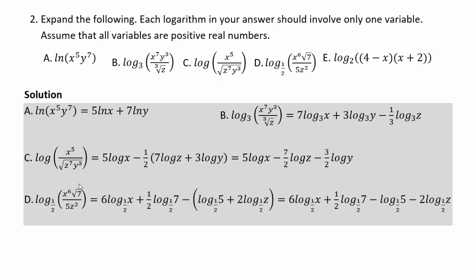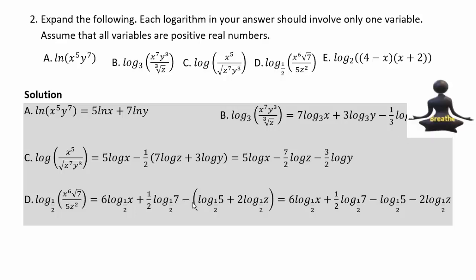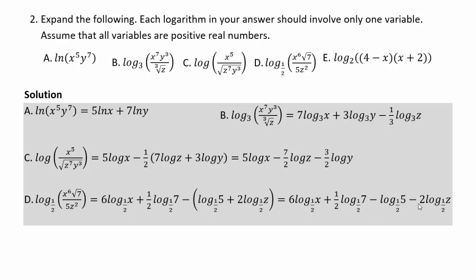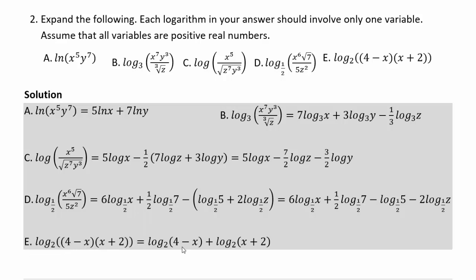For log base 1/2 of (x⁶ · √7 / (5 · z²)): 6 log base 1/2 of x + (1/2) log base 1/2 of 7, then subtract (log base 1/2 of 5 + 2 log base 1/2 of z), because the denominator terms all get a subtraction sign due to negative exponents. For log base 2 of a product (4 − x)(x + 2): it separates as log base 2 of (4 − x) + log base 2 of (x + 2).